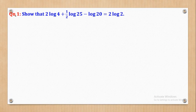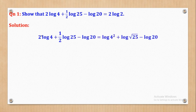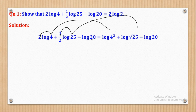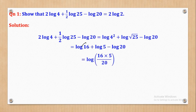Question 1 says: show that the left-hand side equals the right-hand side. We start from the left-hand side and simplify. We bring the power 2 down to get 4 squared, and bring the half down to get 25 to the half — which is the square root of 25. So 4 squared is 16 and the square root of 25 is 5. Since we have addition, those two are multiplied; then this result minus the next means it is divided by 20.